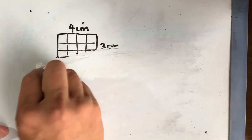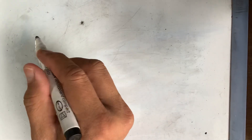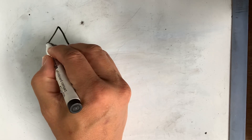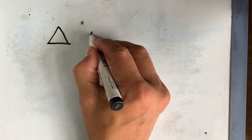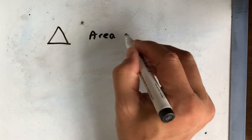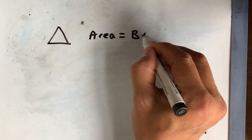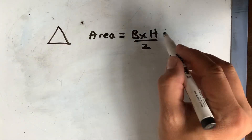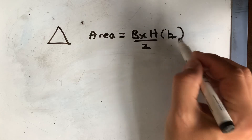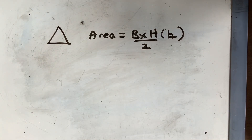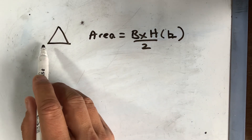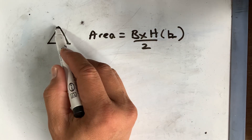Now let's look at some other common areas we're going to learn. The first one is the triangle. Can anyone remember what the area of a triangle is? The formula is base times height divided by 2. The most important thing to know is that the height and the base must be 90 degrees to each other, so you need to identify which base of the triangle to use — it could be any of the three sides.